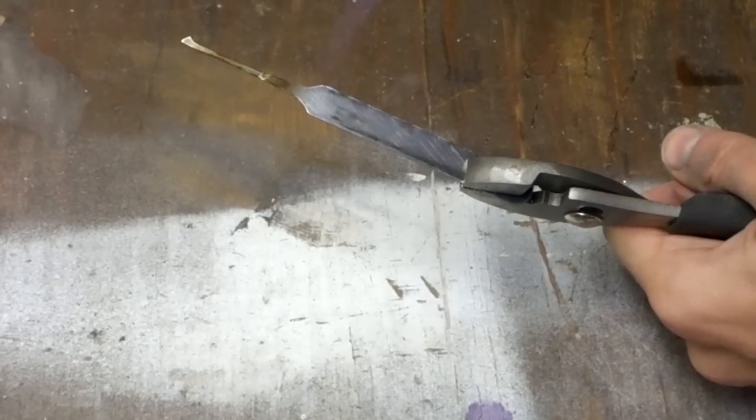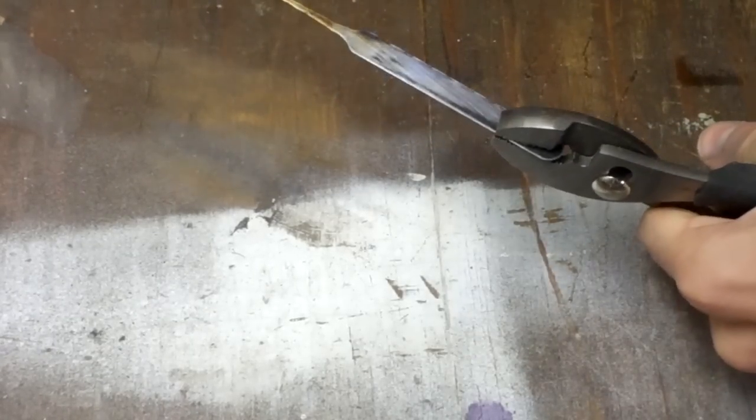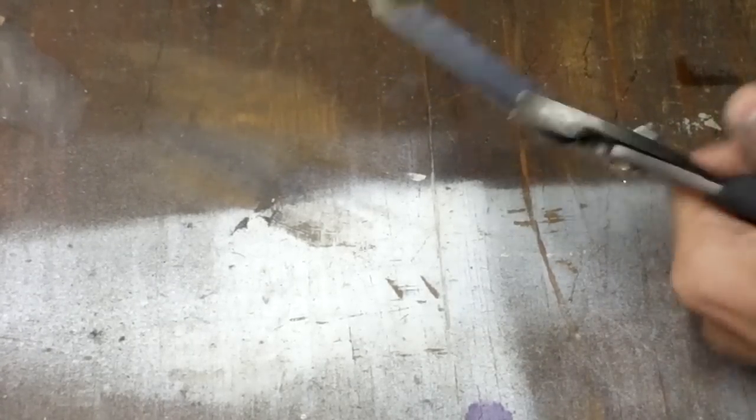I find it's best to start on the thicker end and work your way back because the thicker end is slower to heat up. You can see here how the metal has turned kind of a yellow color.